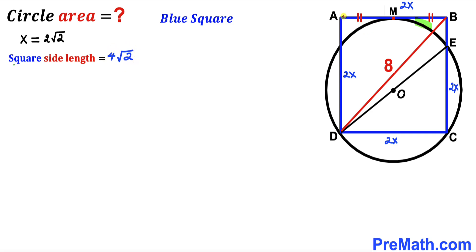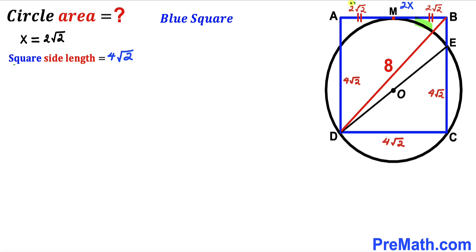Now let's observe that the full AB length is 2x and M is the midpoint. Therefore AM = x = 2√2 and MB = x = 2√2 as well. All side lengths of this square are 4√2 across the board.